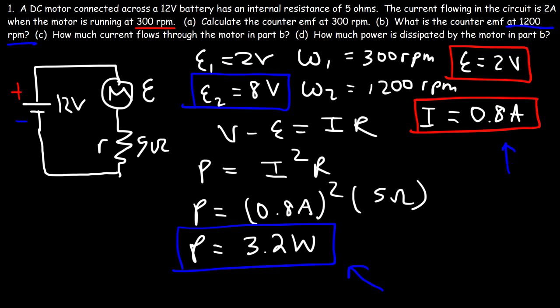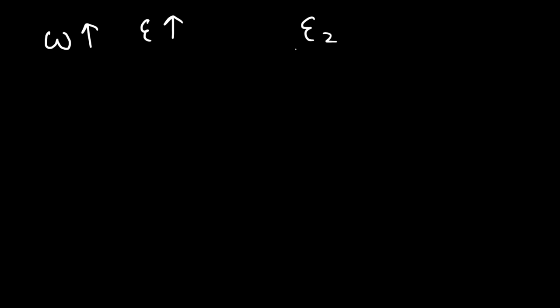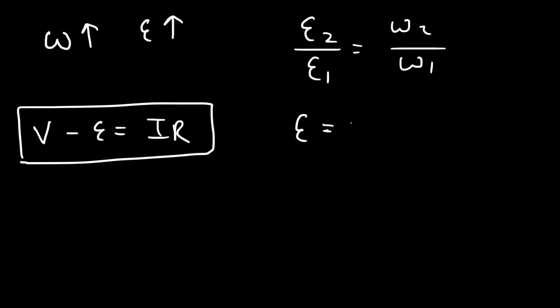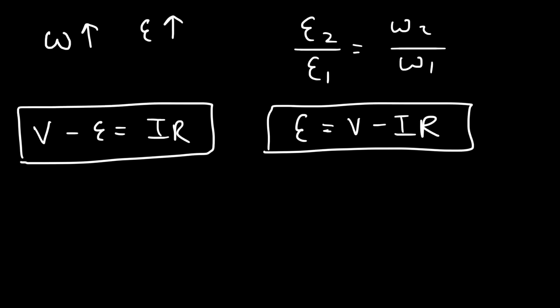Let's review the formulas we've used. As the angular speed (RPMs) of the motor increases, the counter EMF increases, described by EMF1/EMF2 = omega1/omega2 — so you can calculate the counter EMF at any speed if you know one EMF-speed pair. The second formula is V minus counter EMF equals IR, which lets you calculate voltage, EMF, current, or internal resistance. Rearranged, counter EMF equals V minus IR. Thanks for watching — I hope this helps on your next exam.